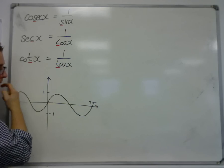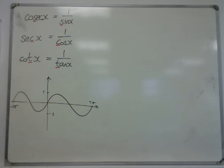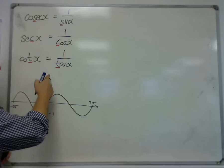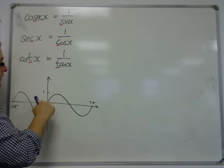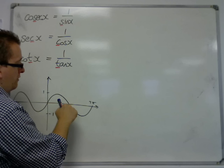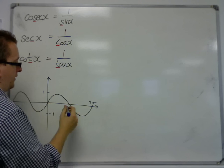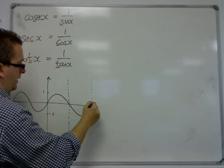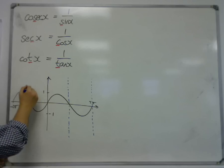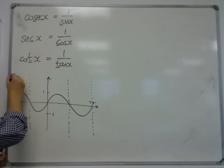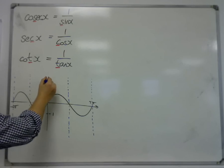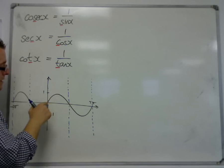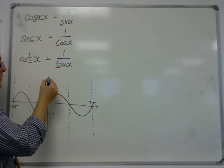then what we end up with is a curve that would look something like this. Because 1 divided by 0, that would get us an asymptote. And 1 divided by 0 here would get us an asymptote. And 1 divided by 0 here would get us an asymptote. So there will be asymptotes every pi along the graph for cosec. And on the y-axis,